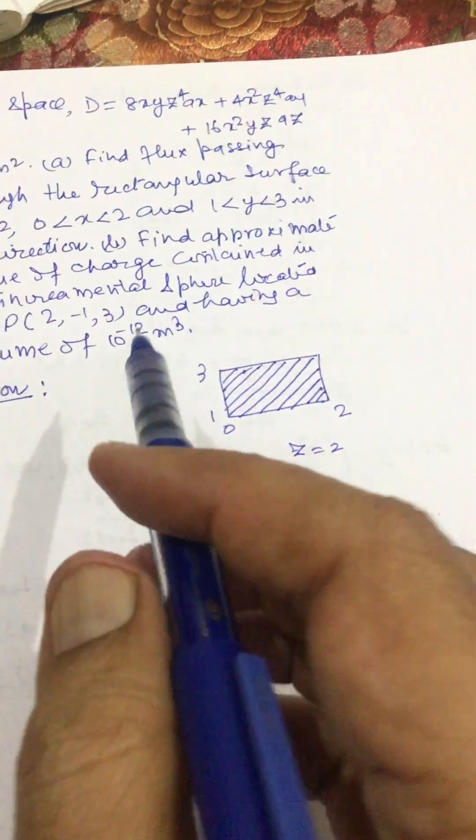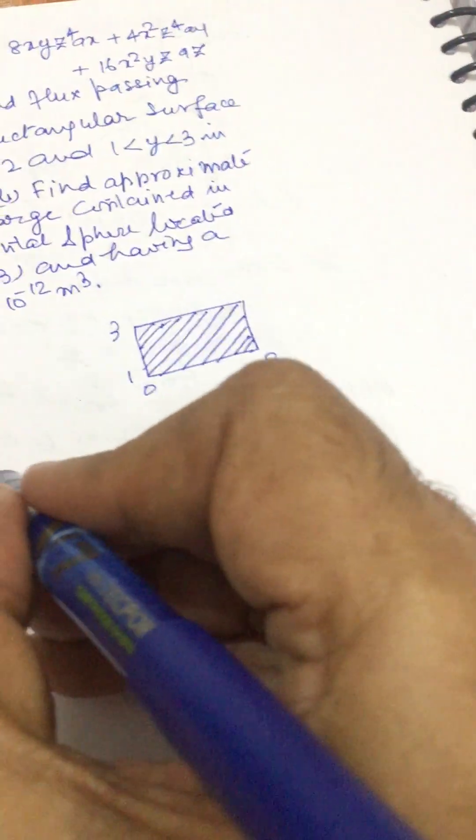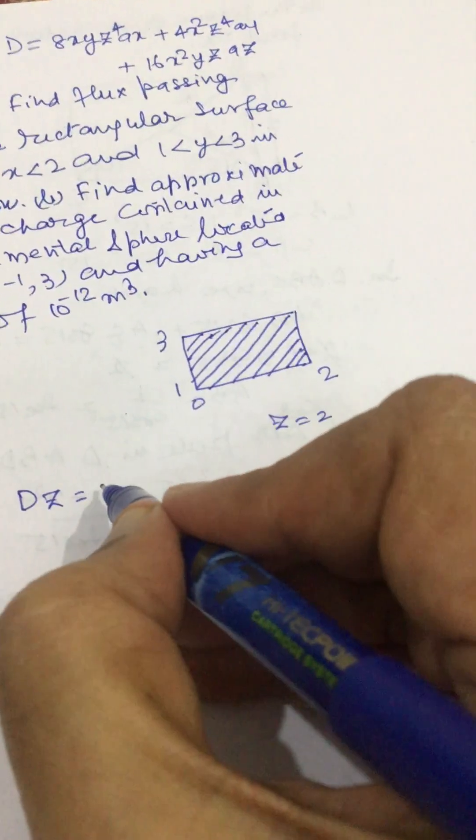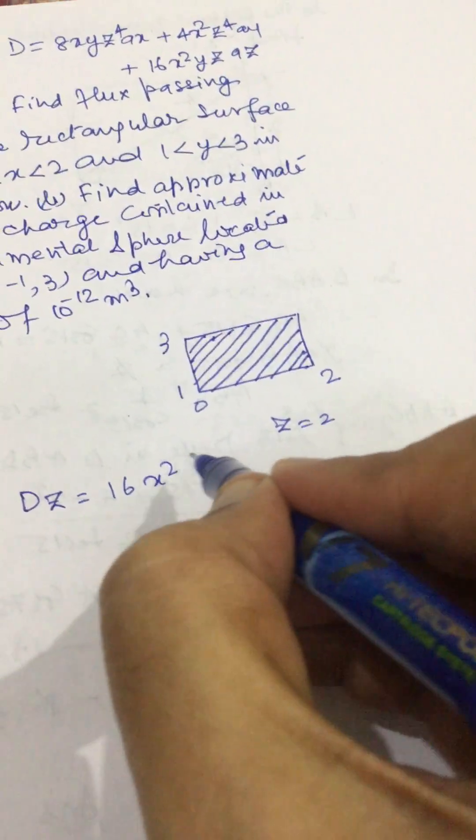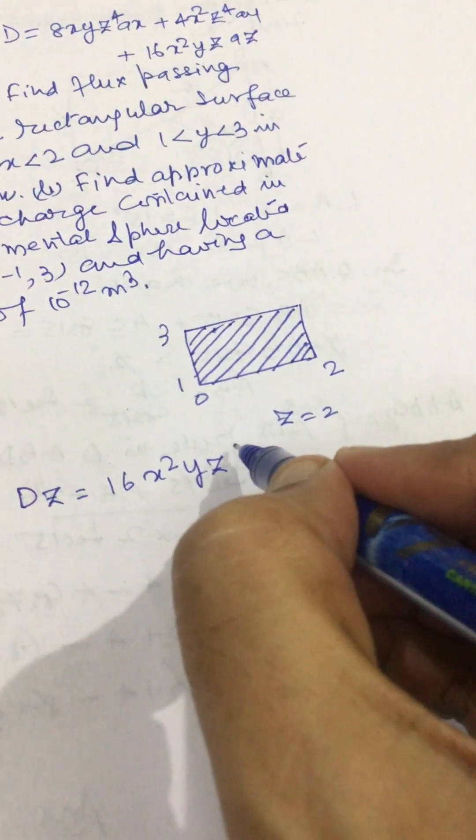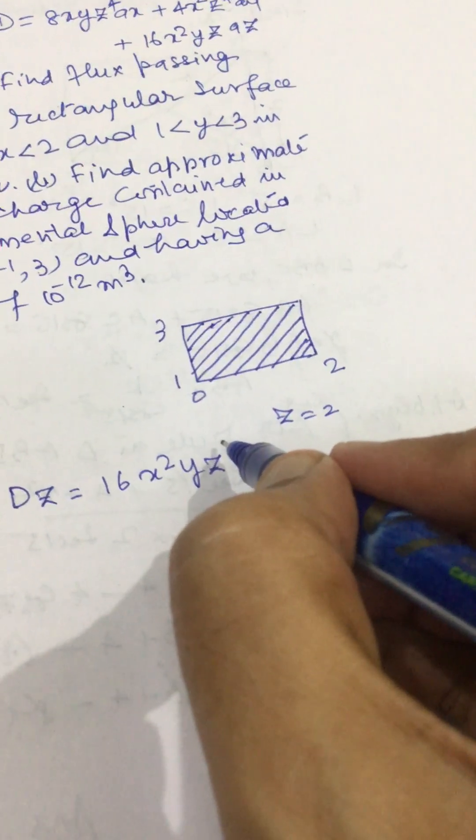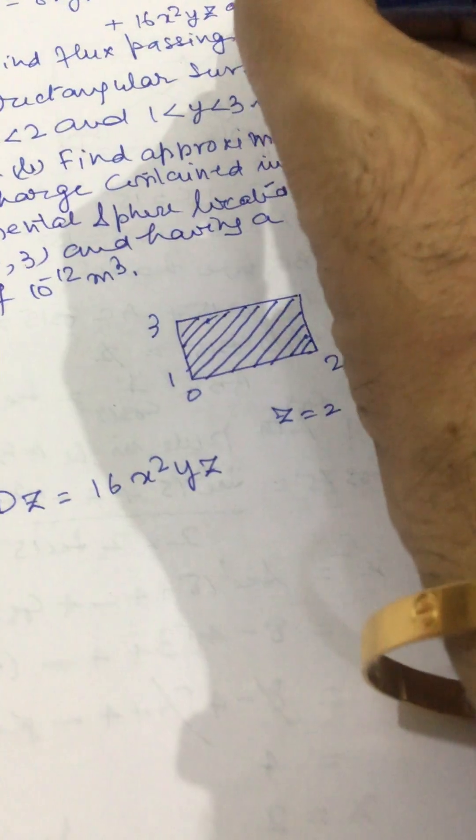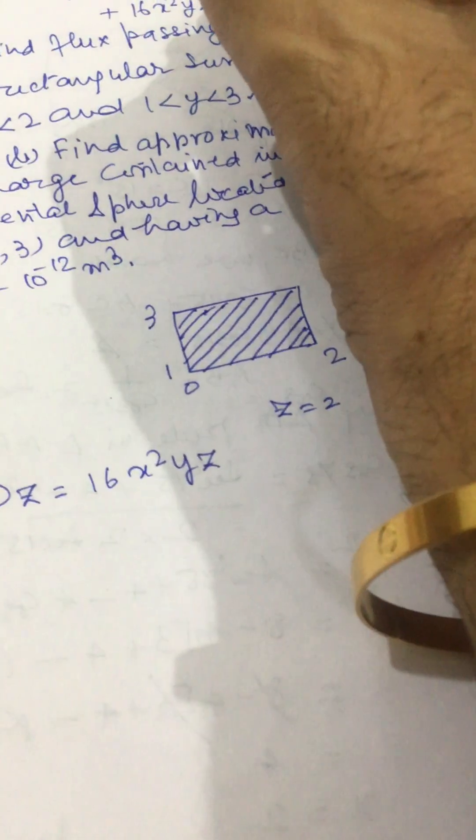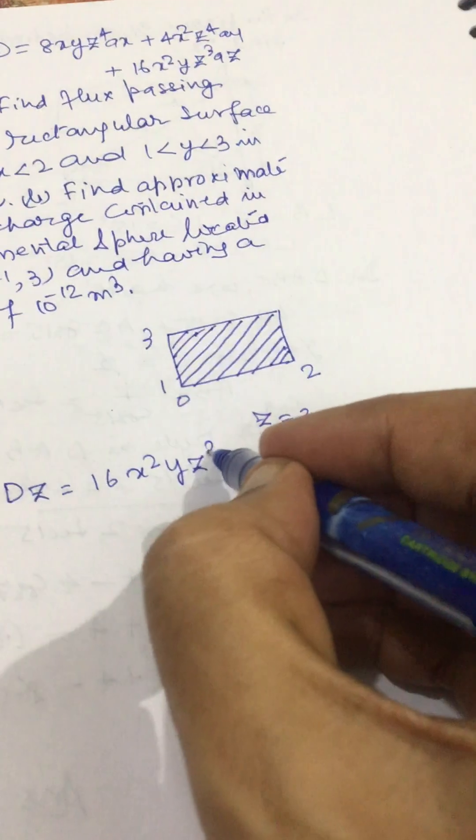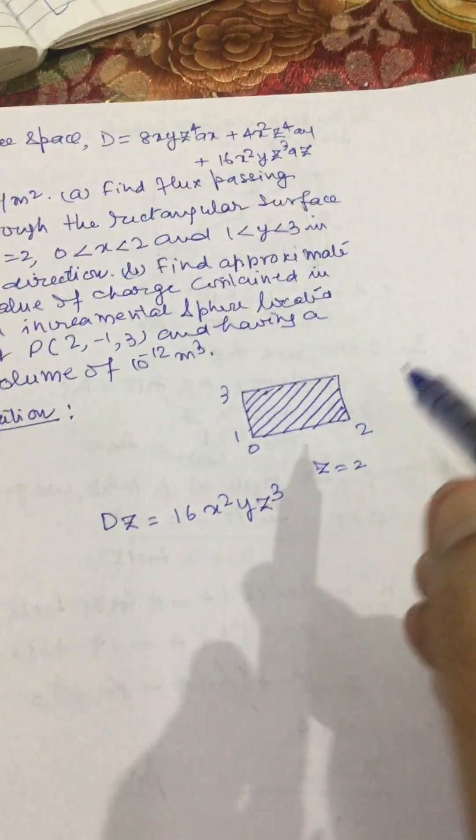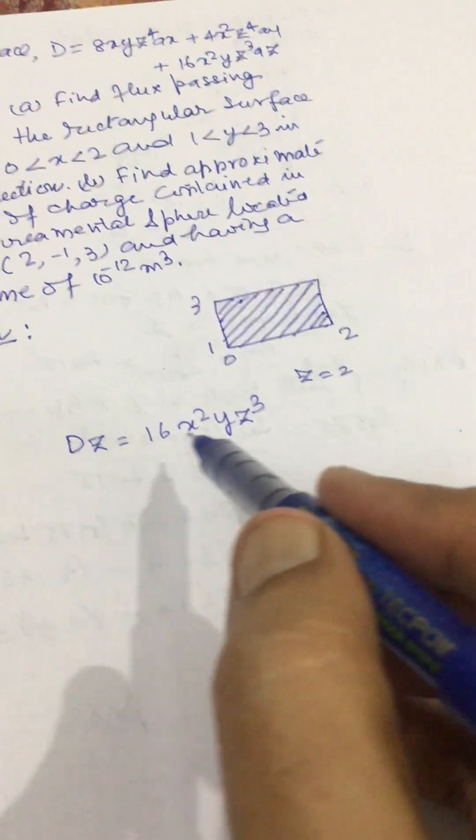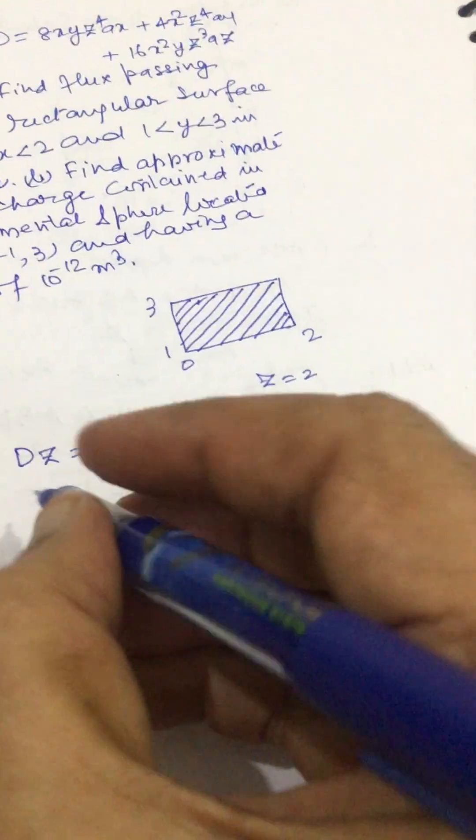As we have to find out the flux passing in the z direction, we will have to consider only the z component of the flux density, that is 16x^2y/z^3. So we will consider only the z component of the flux density.